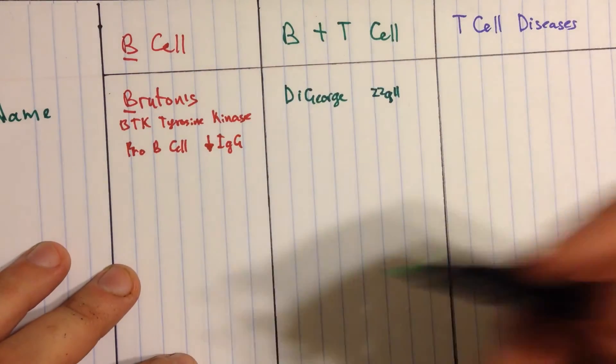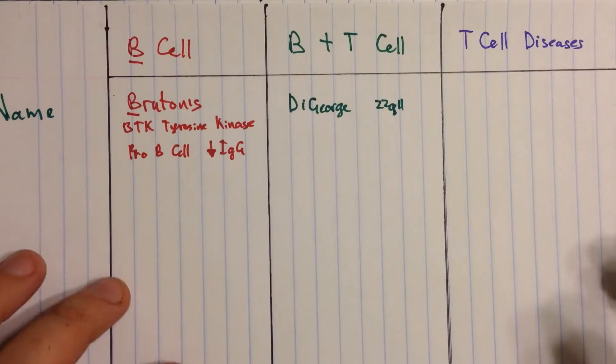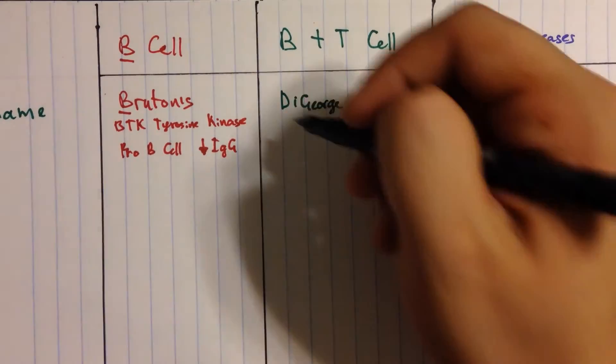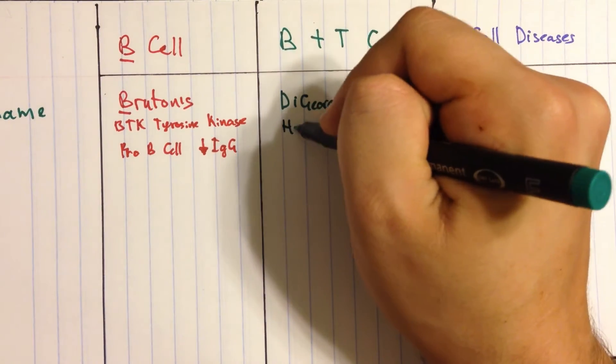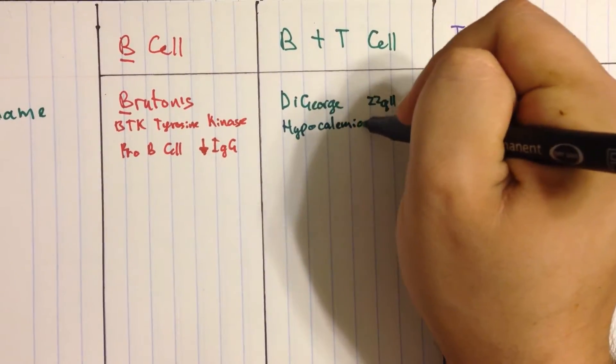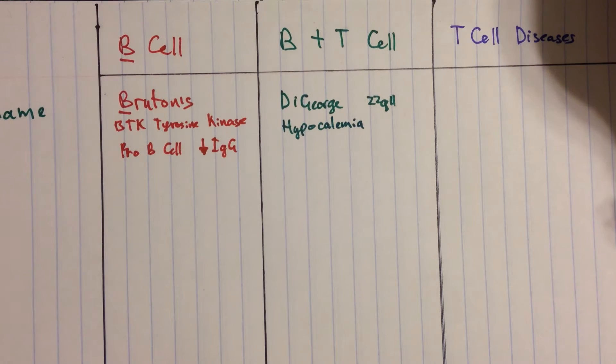And what happens with this disease is as a result of it, you don't develop your thyroid and you have chronically low calcium, so you're going to see hypocalcemia. If you see an immuno condition with hypocalcemia, it's probably DiGeorge. That's what you want to start thinking about.